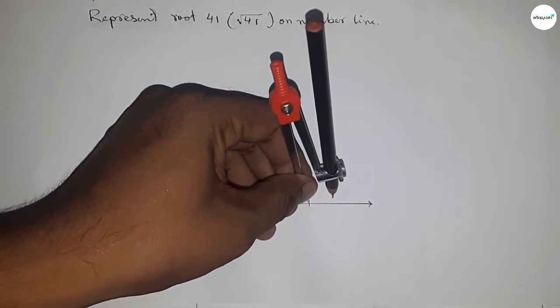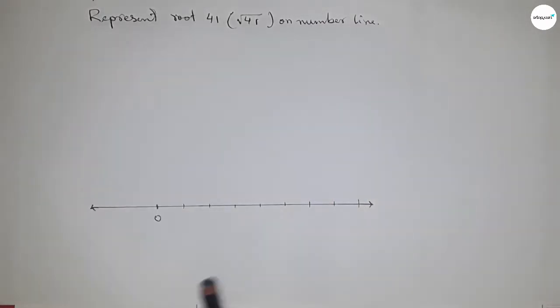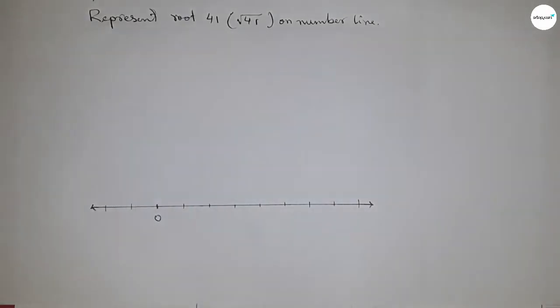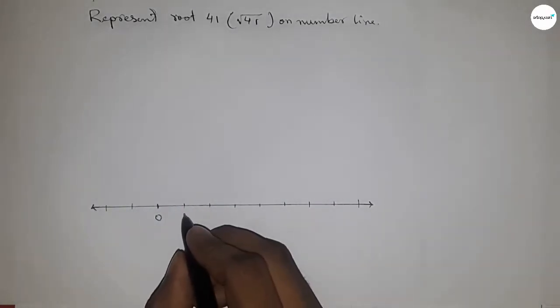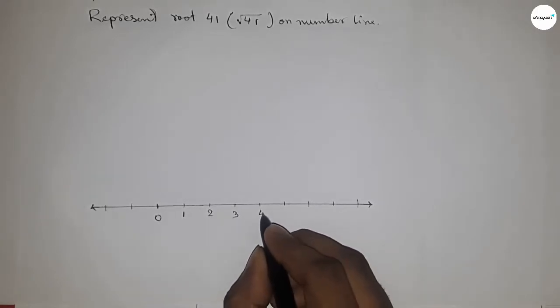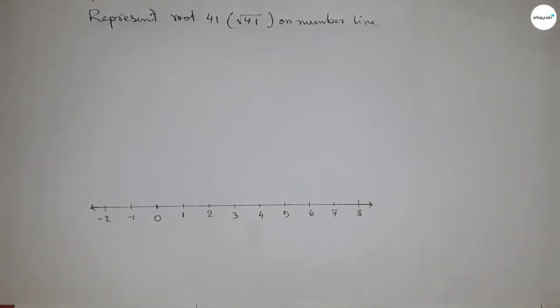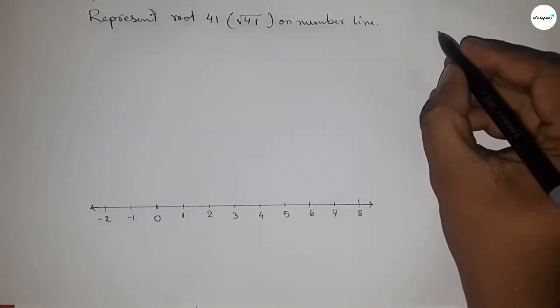This length is called unit length or one unit length. You can take any length to mark the numbers on the line. So this is 1, 2, 3, 4, 5, 6, 7, 8, and on this side minus 1, minus 2, and so on.